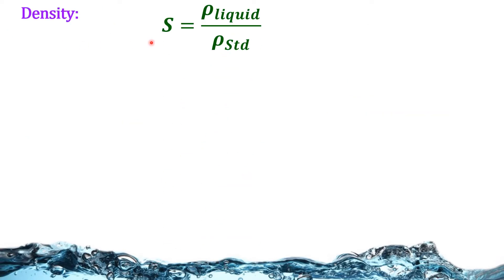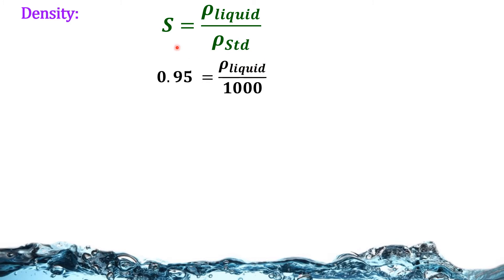Next, density. We know that specific gravity S = density of liquid / density of standard liquid. S is given as 0.95. Substituting, we get the density of the liquid as 950 kg/m³.